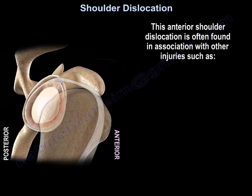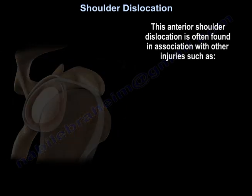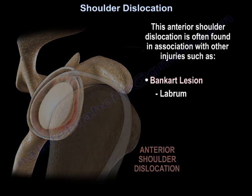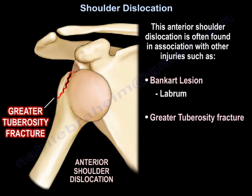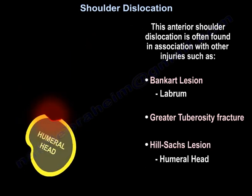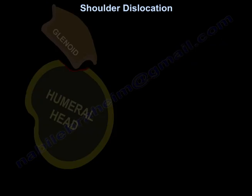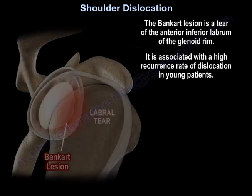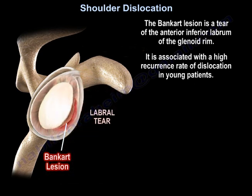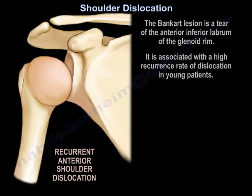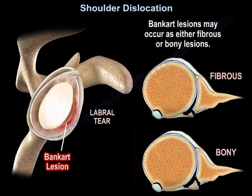Anterior shoulder dislocation is often found in association with other injuries, such as the Bankart lesion — a tear of the anterior inferior labrum of the glenoid rim — a greater tuberosity fracture, or a fracture of the humeral head called the Hill-Sachs lesion. The Bankart lesion is associated with a high recurrence rate of dislocation in young patients, and it can be fibrous or bony.